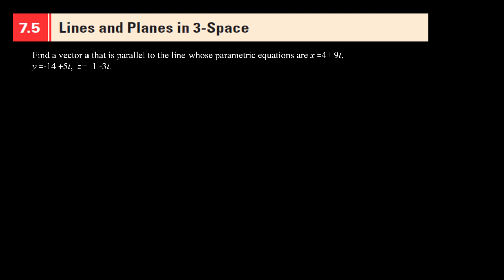Hi guys, this video is the continuation of my previous video on lines and planes in 3D. Here in this problem we have to find a vector that is parallel to the given line whose parametric equations are given. We talked about parametric equations in the previous video — I'm going to post the link in the description below. Now we're given this parametric equation.